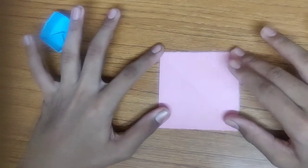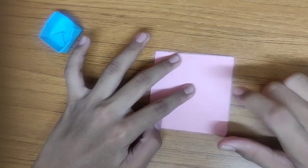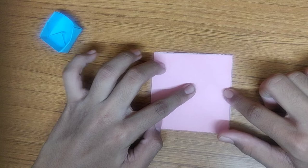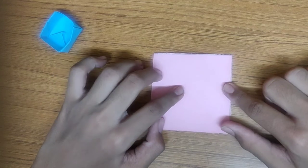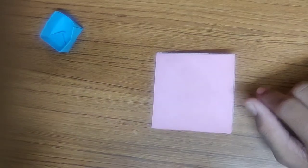We are supposed to do the same with a square sheet of paper. Well, this is of measurement 7.5 centimeters into 7.5 centimeters. So we are supposed to follow the same steps. So let's start.